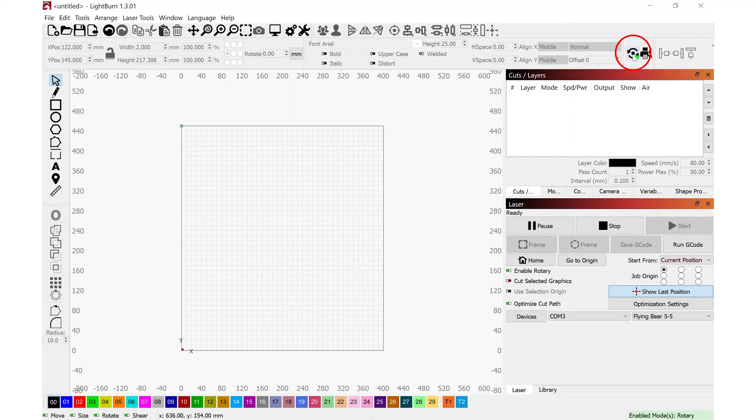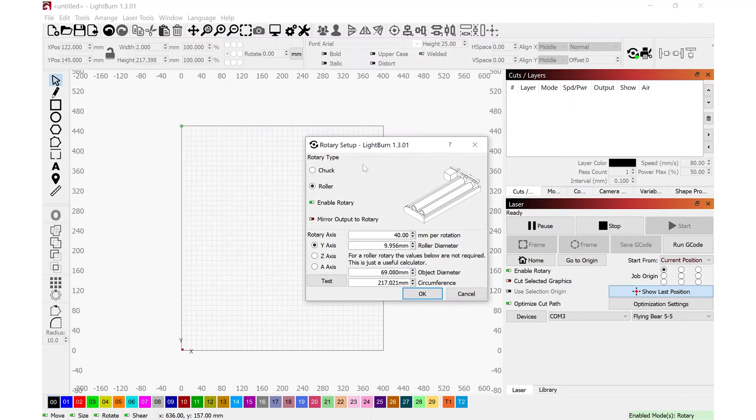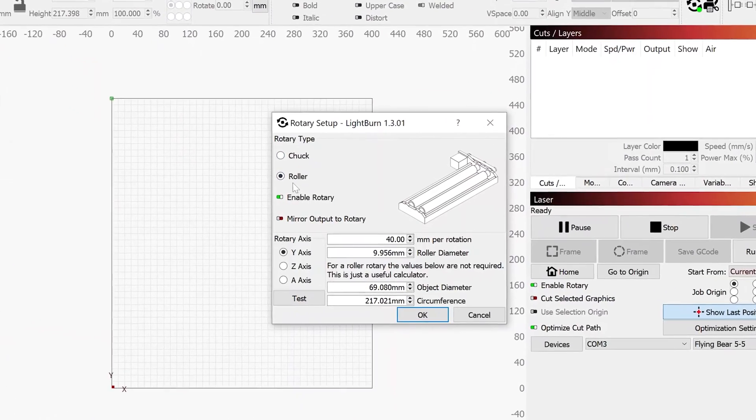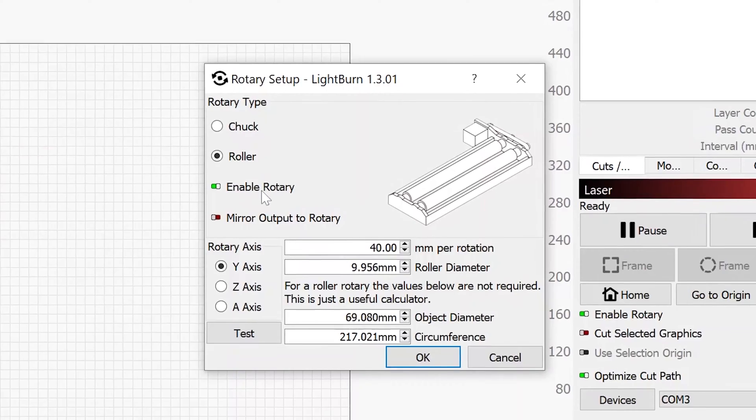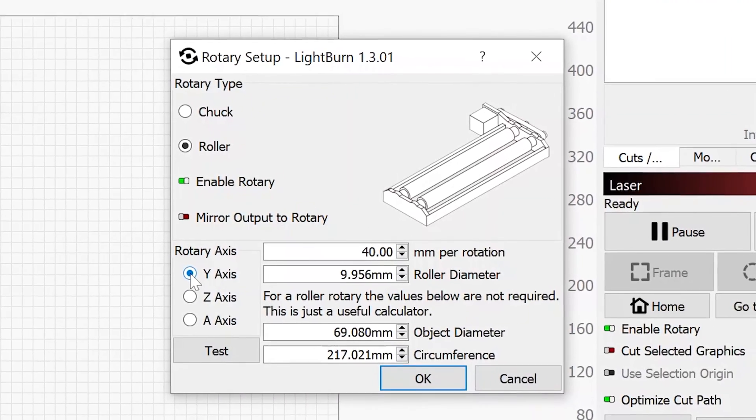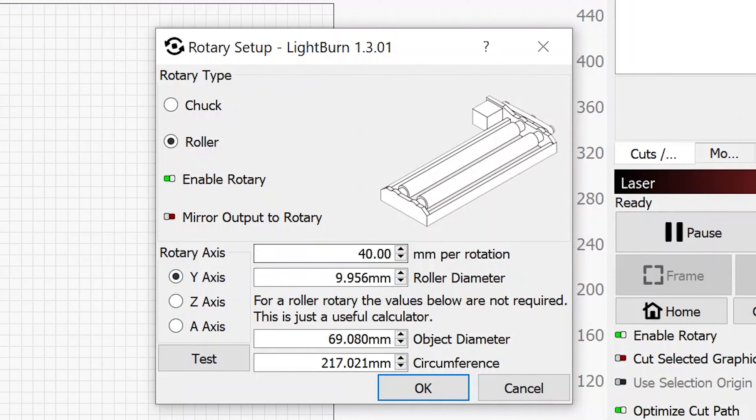When I navigate to the top of the screen here, I have this rotary setup button. I'm going to click on that. That brings up the sub menu. I want to make sure that I have the roller checked. We already have enabled the rotary. We want to be on the y-axis.